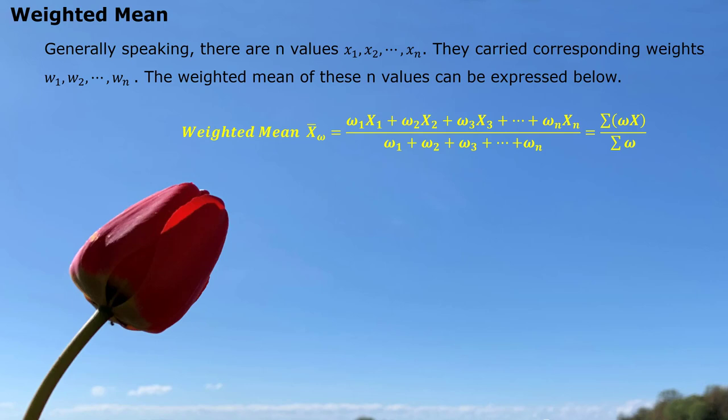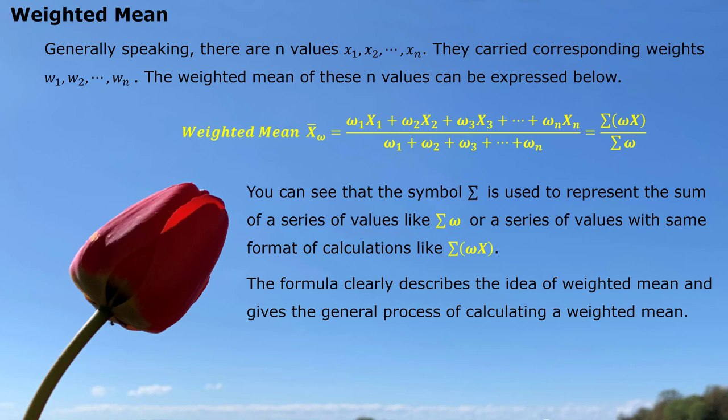Here we have a symbol — sigma — which represents sum. We can use this Greek symbol: sigma wx on the top and sigma w at the bottom. The mean is expressed by the symbol x-bar with the subscript w at the bottom right corner, giving you the idea that this is about weighted mean. The formula clearly describes the idea of weighted mean and gives the general process of calculating it.